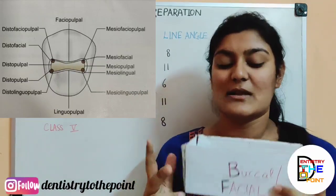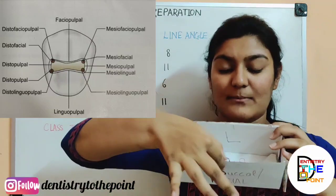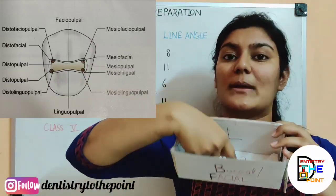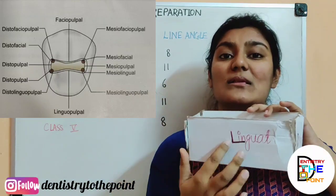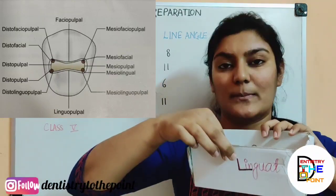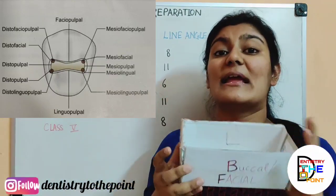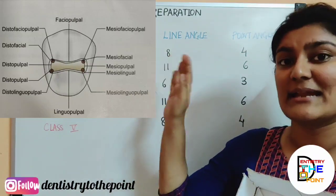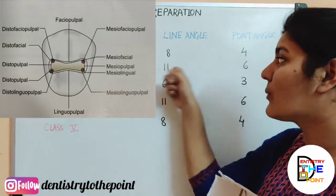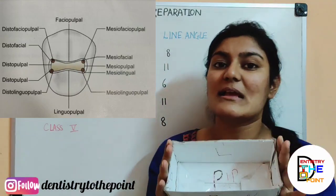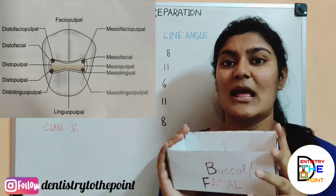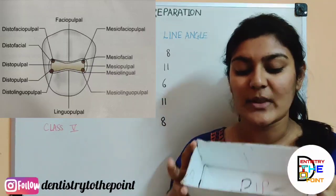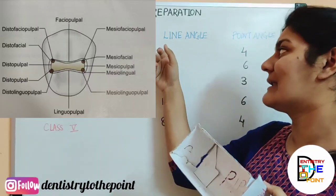Two more line angles are formed: the buccal surface with the pulp gives the facio-pulpal line angle, and the lingual surface with the pulp gives the linguo-pulpal line angle. So in total you have eight line angles for a class 1 preparation.